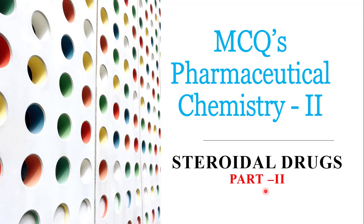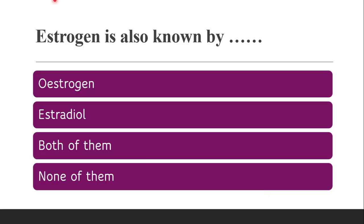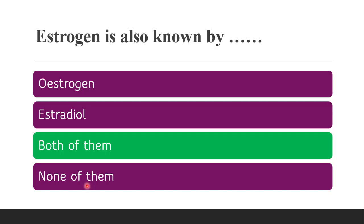Starting with the first MCQ from Part 2: estrogen is also known by dash. Whether it is known by oestrogen, estradiol, both of them, or none of them. The correct answer is both of them — estrogen, oestrogen, and estradiol are all forms of estrogen.